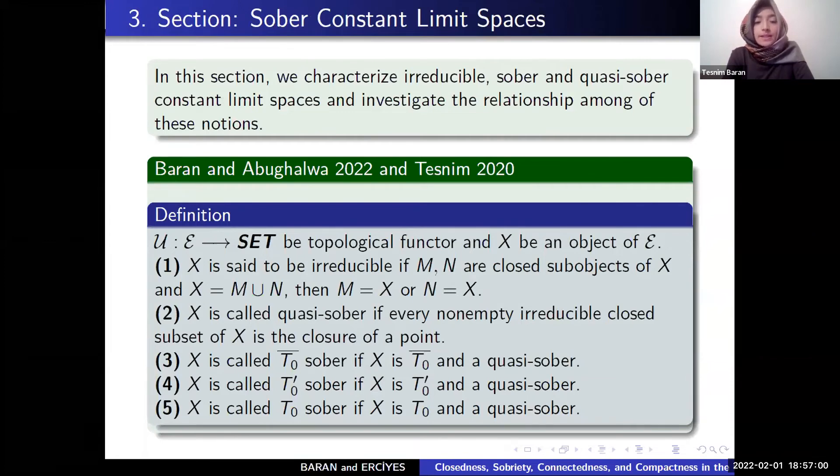Sober constant limit spaces. U is a topological functor, and X is said to be irreducible if M and N closed sub-objects of X, and X equals M union N, then M is X or N is X. X is called quasi-sober if every non-empty irreducible closed subset of X is the closure of a point. X is called T0 bar sober if X is T0 bar and quasi-sober.